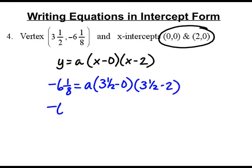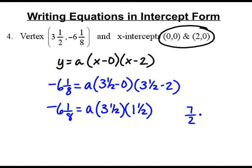So we have negative 6 and 1 eighth equals a times 3 and a half times 1 and a half. Okay, if you remember 3 and a half is the same thing as saying 7 halves because 2 times 3 is 6 plus 1 is 7. 1 and a half is the same thing as 3 halves because 2 times 1 is 2 plus 1. We get 21 over 4 when we multiply those together. So we have negative 6 and 1 eighth equals a times 21 fourths.